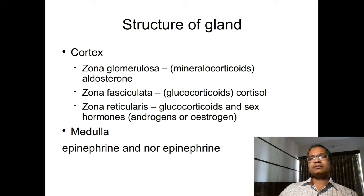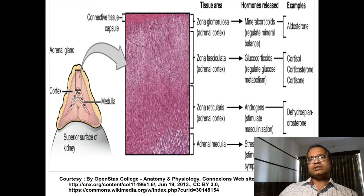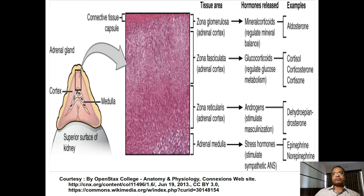The zona reticularis is the innermost layer of the cortex. It secretes glucocorticoids and sex hormones — androgens and estrogens — which help in the development of secondary sexual characters. The medulla secretes mainly epinephrine and norepinephrine.